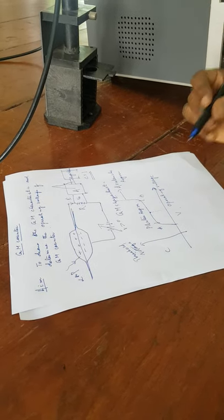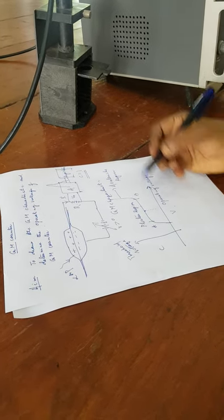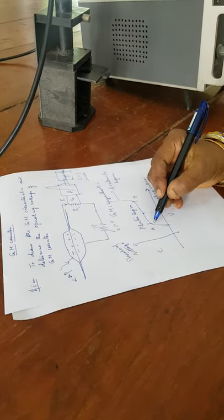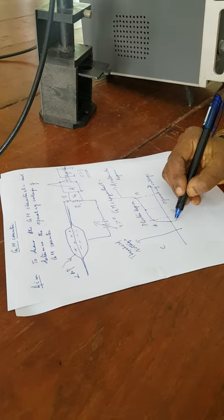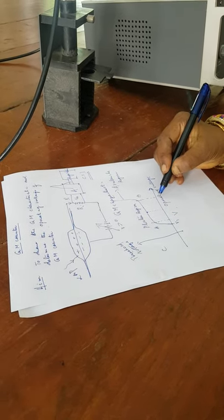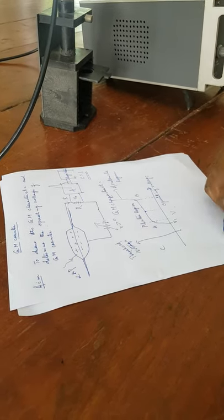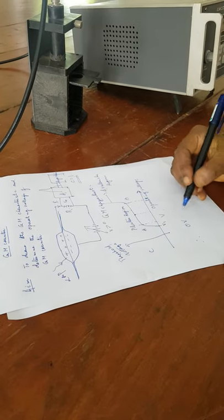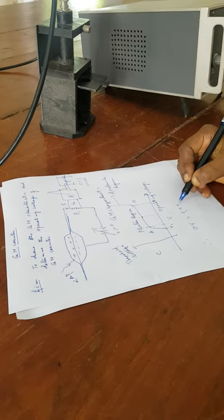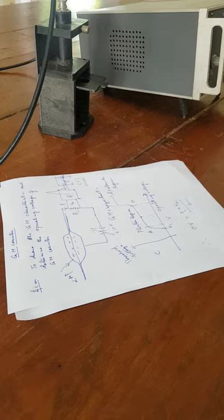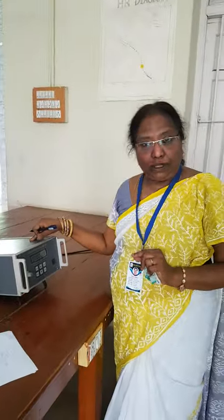The midpoint of the plateau region A-B gives the operating voltage. To get it, we drop perpendiculars to the x-axis at V1 and V2. Therefore, operating voltage = (V1 + V2) / 2. Every counter has an operating voltage, and before you do any experiment with the GM counter, you have to find this operating voltage.